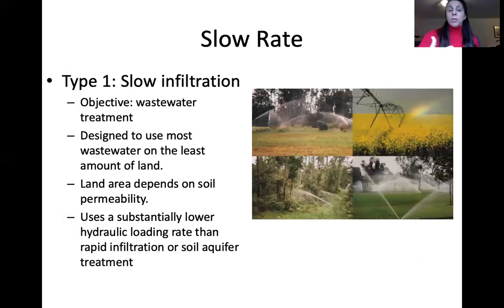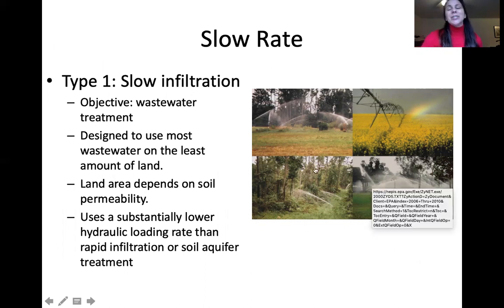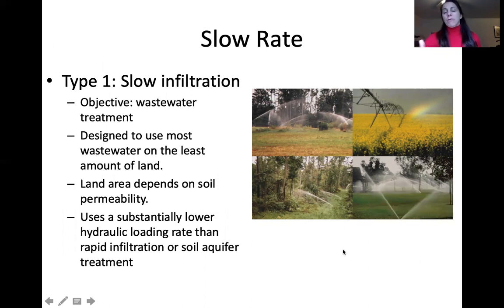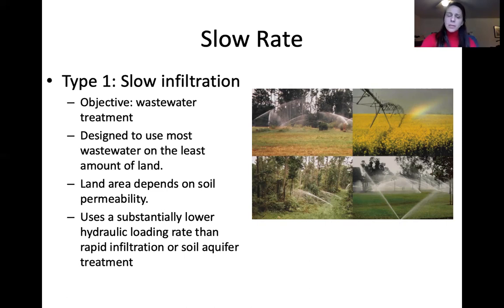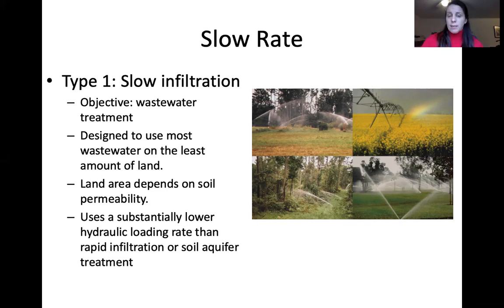Type one is slow infiltration — wastewater applied via sprinklers into forested areas or croplands. The objective for forest areas is to use the most wastewater on the least amount of land. Land area needed is 100% based on soil permeability and evaporation. It uses a lower hydraulic loading rate than rapid infiltration or soil aquifer treatment, because everything must infiltrate within the landscape it's applied to.